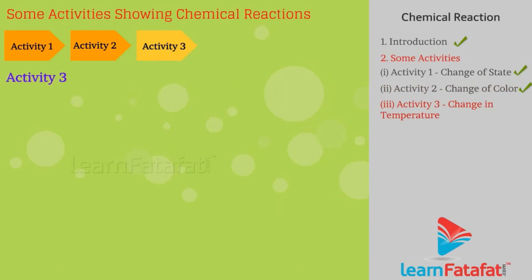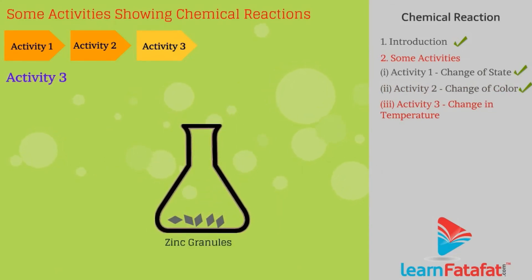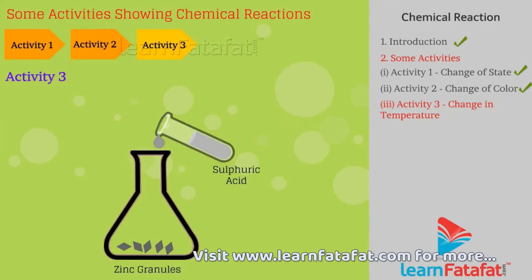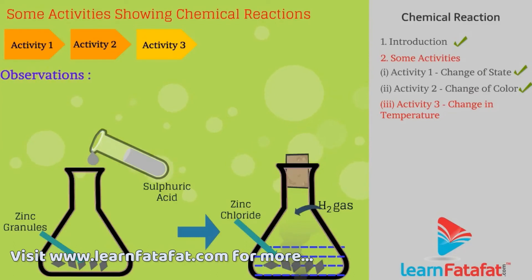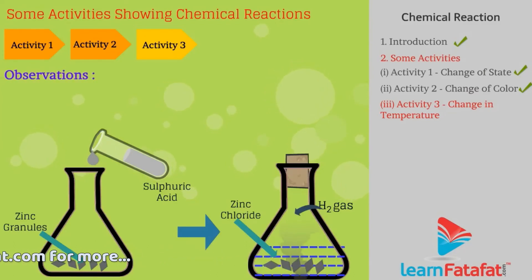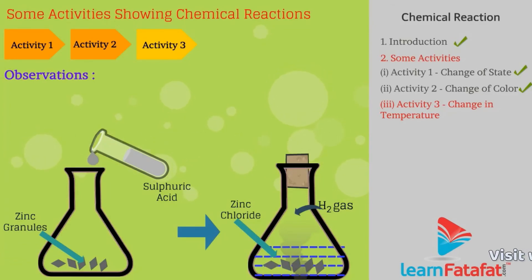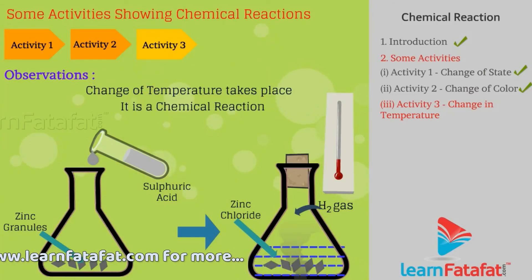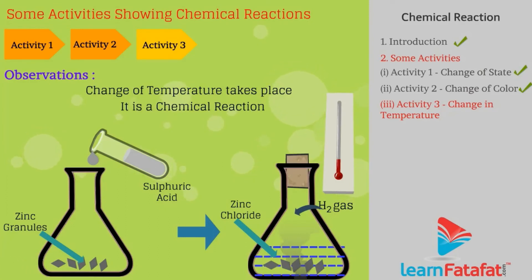Activity 3: Take some zinc granules in a conical flask or test tube and add dilute hydrochloric acid or sulphuric acid to it. Zinc chloride and hydrogen gas are formed. Zinc reacted with dilute sulphuric acid to give zinc chloride and H2 gas. Due to this reaction, gas is evolved and a change in temperature takes place, which specifies it is a chemical reaction.